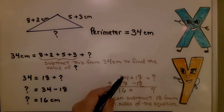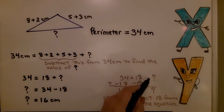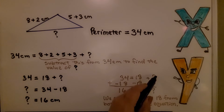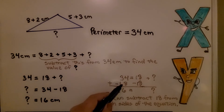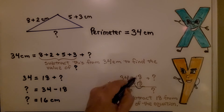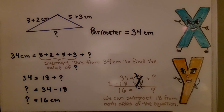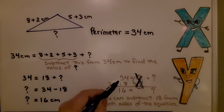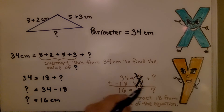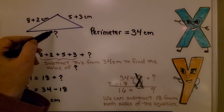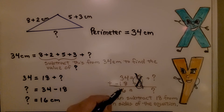We can write 34 equals 18 plus some unknown amount — in algebra, usually another variable like y, p, or q. We subtract 18 from both sides of the equation. This creates a zero pair on one side and we get rid of it. The other side gives us 16. We only have the unknown left on one side, so we know its value is 16.